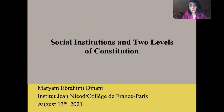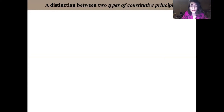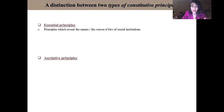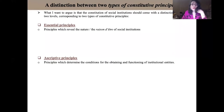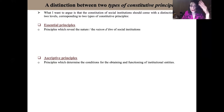My aim in this video is to introduce a distinction between two types of constitutive principles that I want to call essential principles and ascriptive principles. Essential principles are those which reveal the nature or the raison d'être of social institutions. Ascriptive principles are those which determine the conditions for the obtaining and functioning of institutional entities. The constitution of social institutions should come with a distinction between two levels corresponding to these two types of constitutive principles.